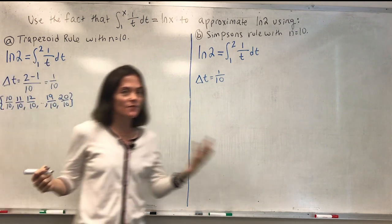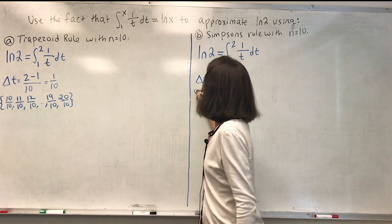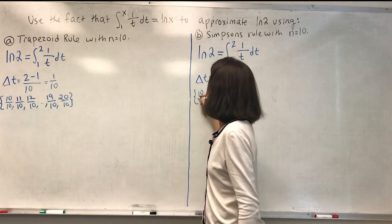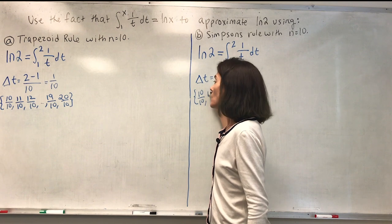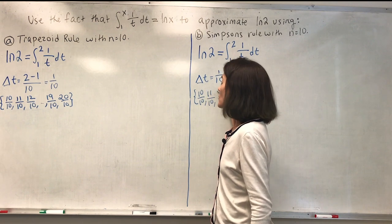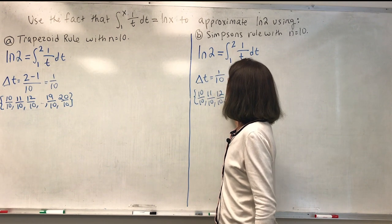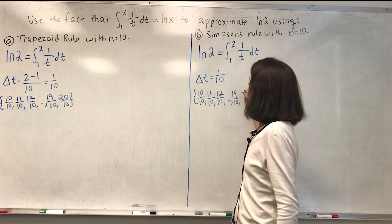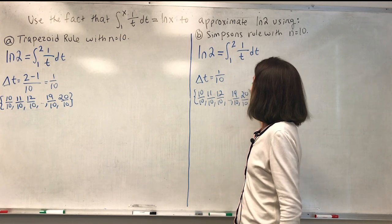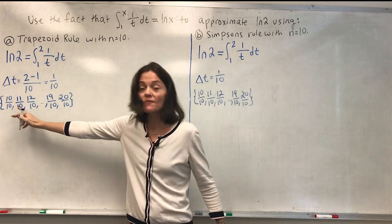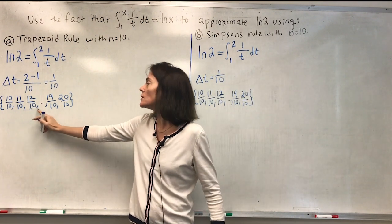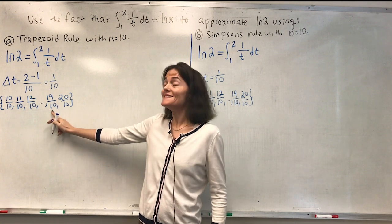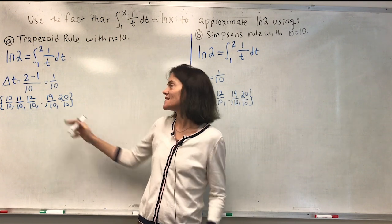And the partition over here is the exact same one, so we have 10 over 10, 11 over 10, 12 over 10, to 19 over 10 and 20 over 10. Okay, so this is for instance t0, t1, t2, this would be t9 and t10.